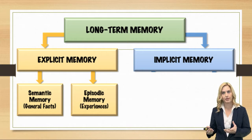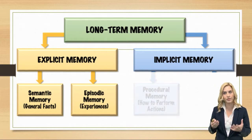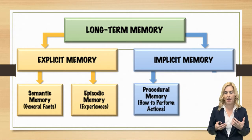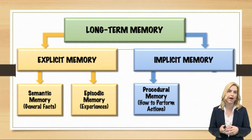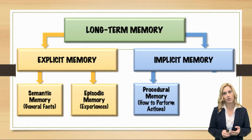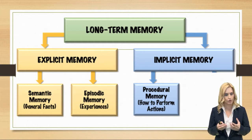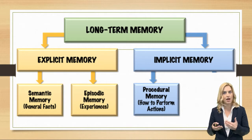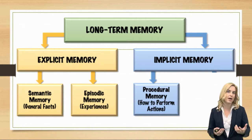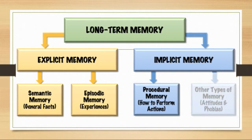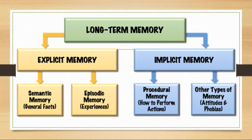Then we have implicit memories. Within implicit memories we have procedural memory, which is how to perform actions — things that are automatic so our brain can concentrate on other things. An example would be riding a bike or brushing your teeth. When you were first learning those things you had to go step by step, but after a few times it becomes automatic — that's procedural memory. We also have other types of implicit memory that we believe include things like attitudes and may even include phobias.